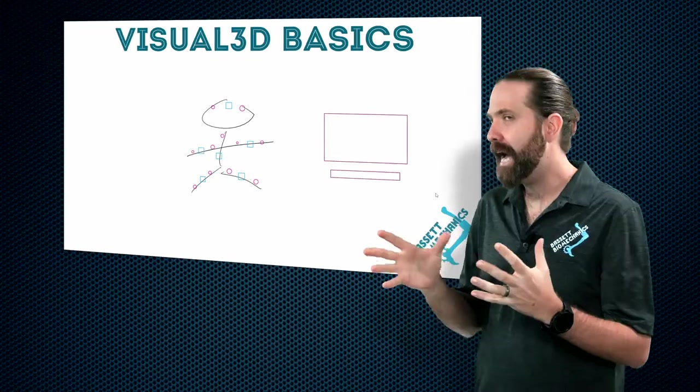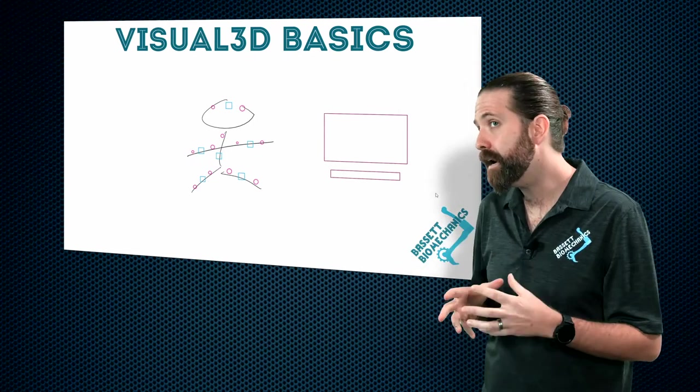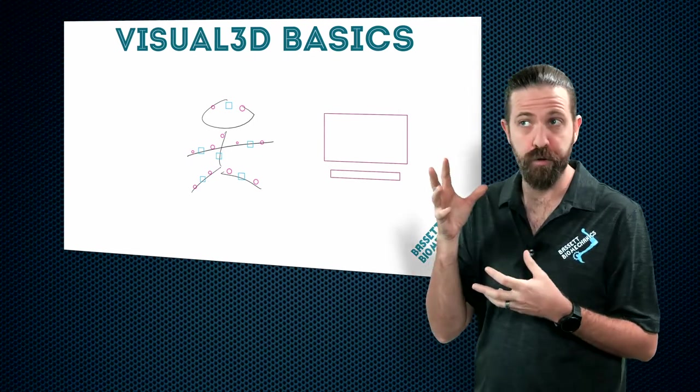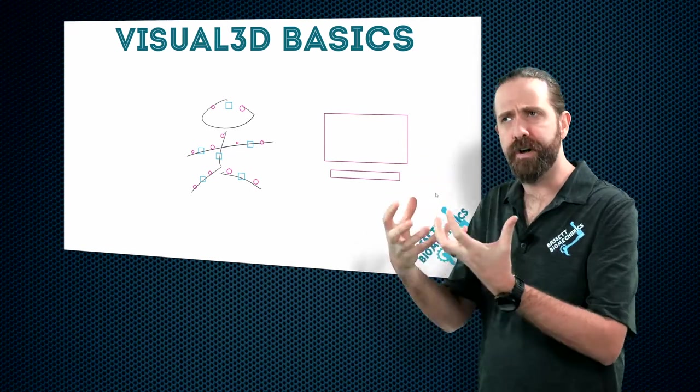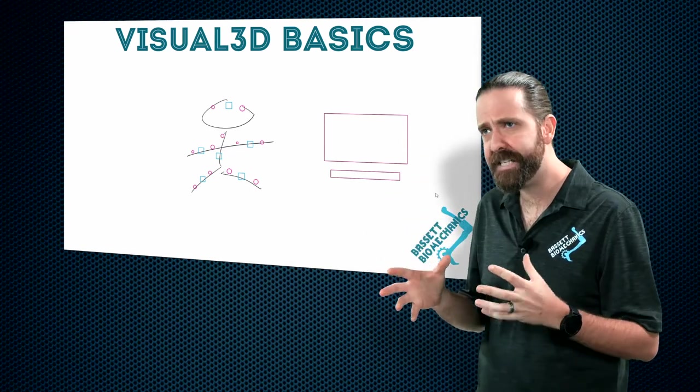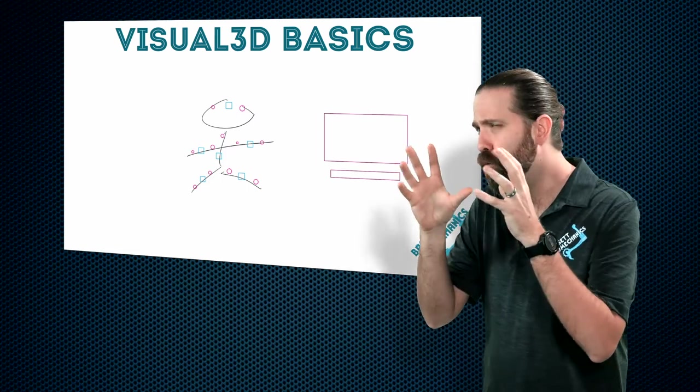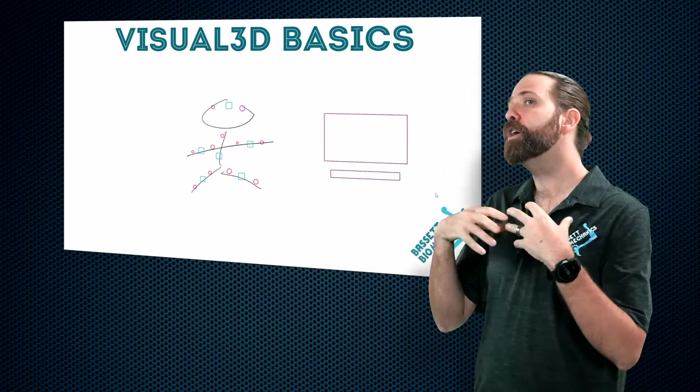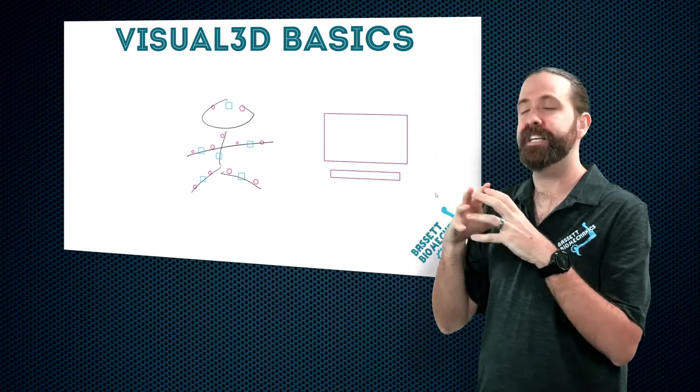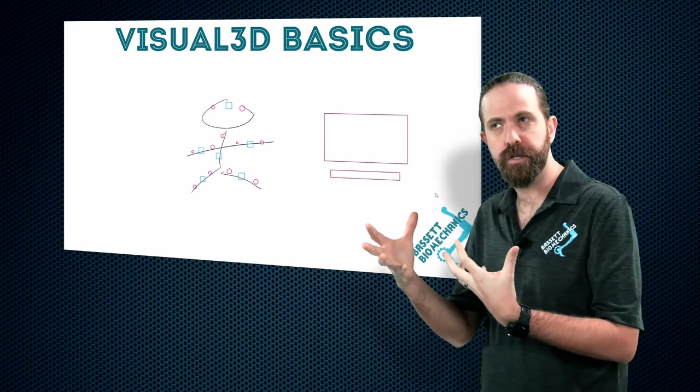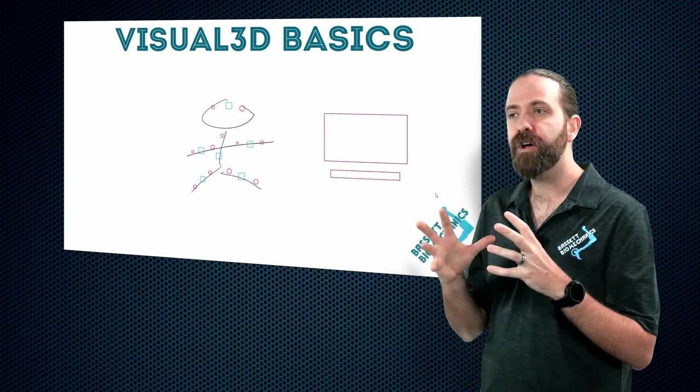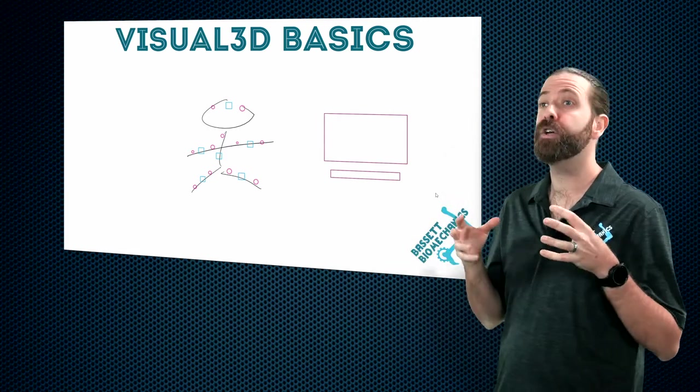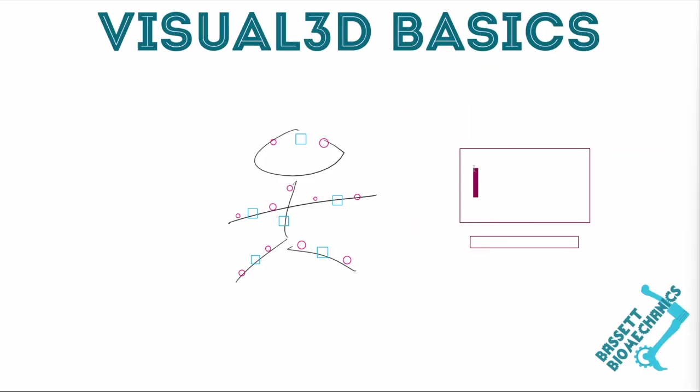However this is happening, it may or may not be the same computer you are using right now in order to run Visual 3D. It is not necessary for it to be the same one. So you will export the data from your motion capture computer and either it will stay on the same one or you use it on a separate one. The important thing is that you export the data in C3D format as that is the format to process the data in Visual 3D.